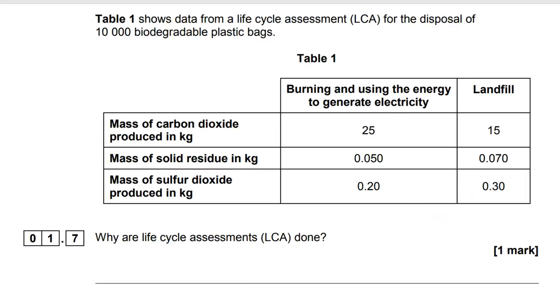Moving on to 1.7. We've got a lot of information here that we're going to come back to for 1.8. But we're starting with why we do life cycle assessments. And it's a very straightforward answer. We do it to assess the environmental impact. We are looking at the resources that are used to make it, the energy used to make it, we're looking at where it goes when it's finished with. Does it go into landfill? All of those are environmental impacts.